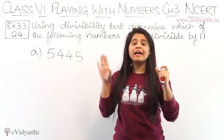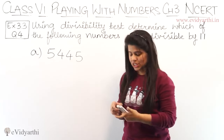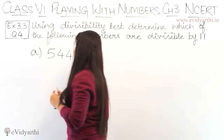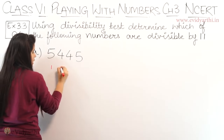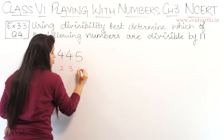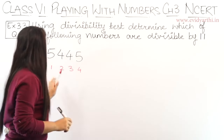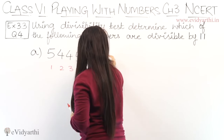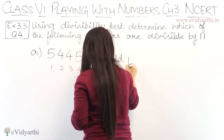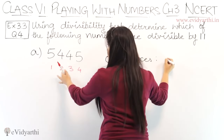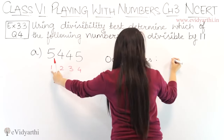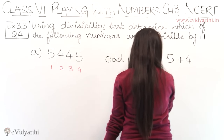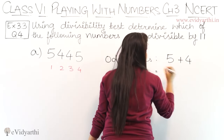We will check which numbers are divisible by 11. So, we will mark all the positions first — 1, 2, 3, 4. Now, here are the odd places, like positions 1 and 3. We have to add the digits at odd places. So, odd places: 5 and 4. So, 5 plus 4 is 9.